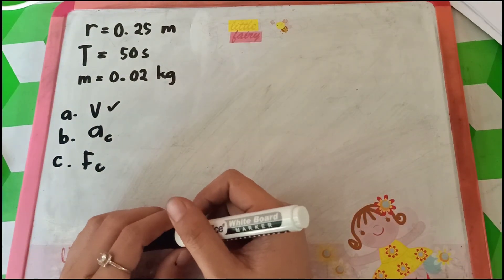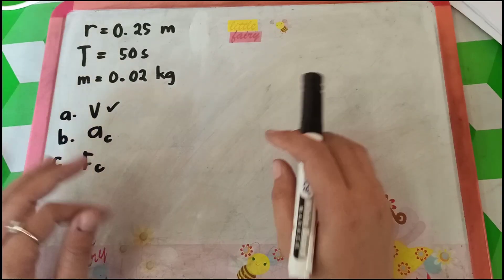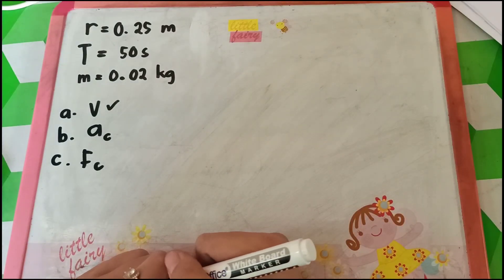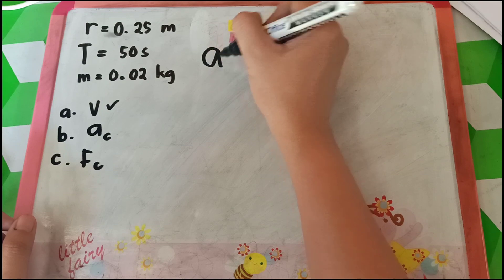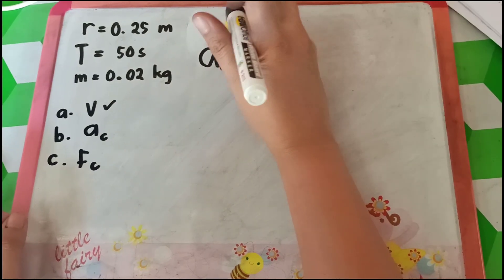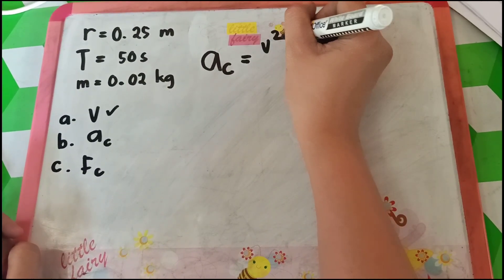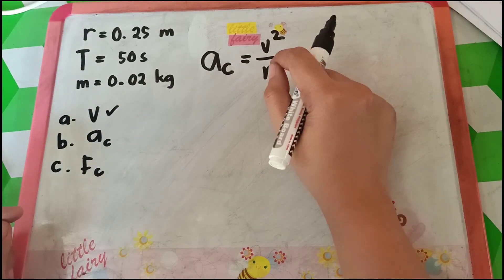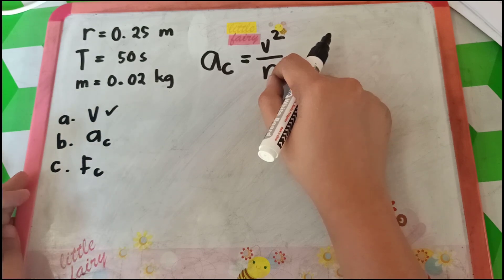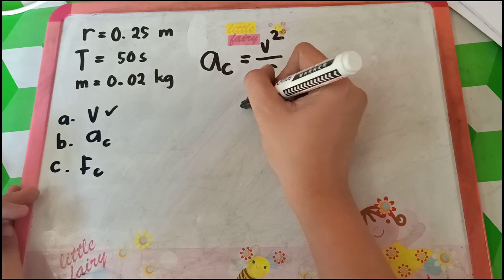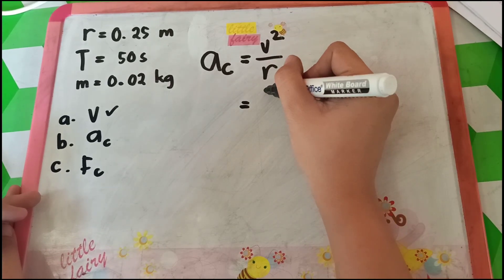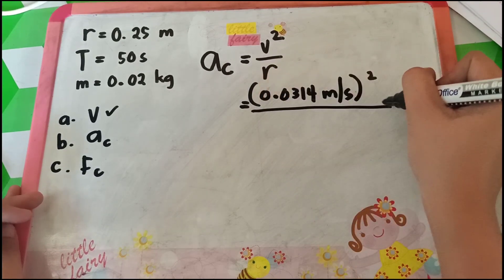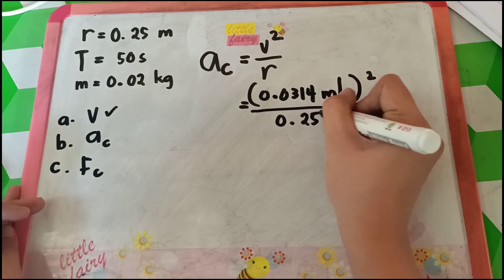Now let's proceed to the second value we are looking for — the centripetal acceleration. The formula for centripetal acceleration is a subscript c equals v squared over r. Here, v stands for the velocity we just solved, and r stands for the radius of the blender. We are looking for the centripetal acceleration of the dried mango pulp. The velocity is 0.0314 meters per second, and we will square it before dividing by the radius of 0.25 meter.